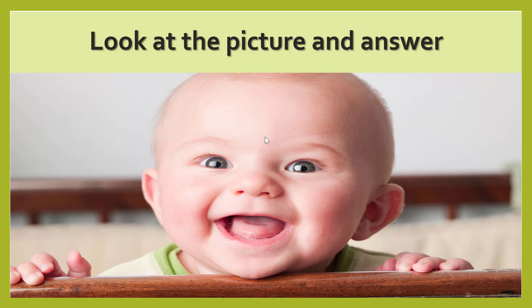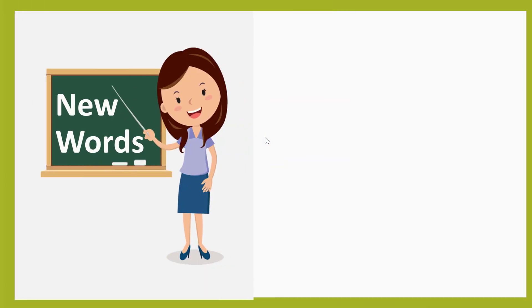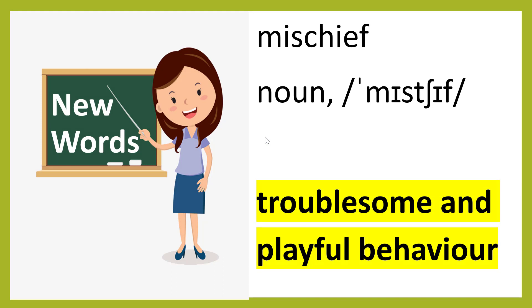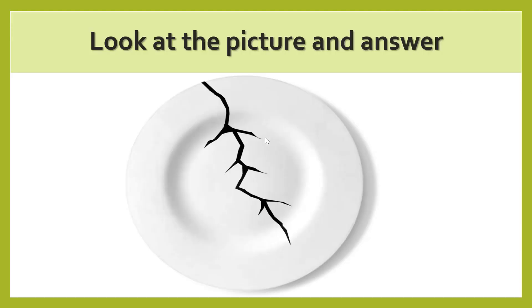Look at the picture and answer. Here we can see a nice picture of a cute little baby, and this baby is looking mischievous. So the word 'mischief' has come in the poem — it's a noun which means troublesome or playful behavior.